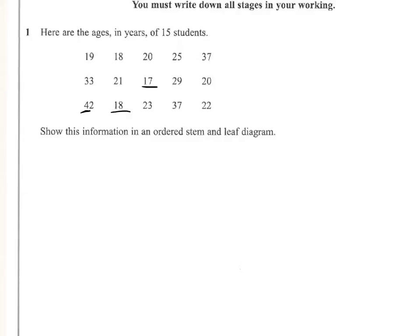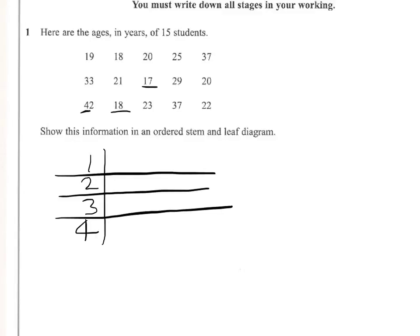So we can see then that we can have a stem that's going to be in the 10s, 20s, 30s and up to 40. So I'll now write out my stems, and I've got the leaf, 1, 2, 3, 4.